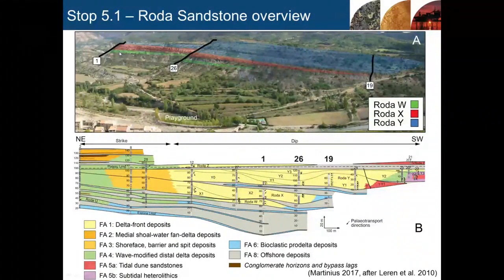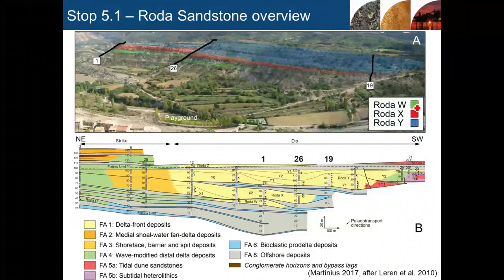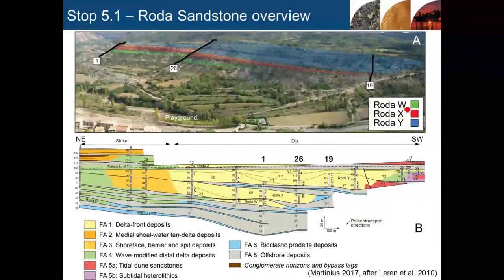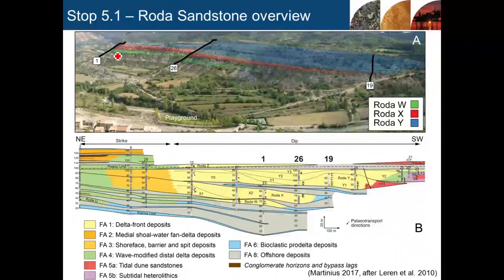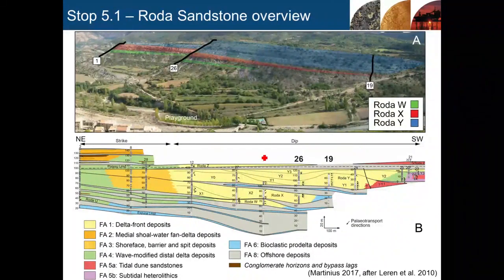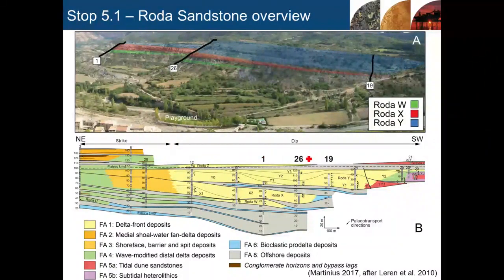Here we can see three benches of sandstone — those are the three I picked out earlier. They're given different colours and assigned names or letters to help subdivide the stratigraphy. You can also see a number of measured sections, labelled 1, 26, and 19, superimposed on the cliff face.